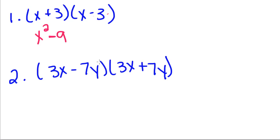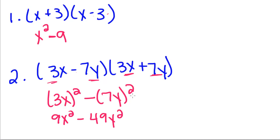Same thing with this one. I have 3x minus 7y, 3x plus 7y. It doesn't matter that I have two different variables, because no matter what, these two middle terms are still going to cancel. So, when I square 3x and 7y, remember you have to square the 3 and the x. So this becomes 9x squared minus 49y squared. You can't just square the y, you have to square both terms.